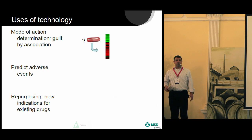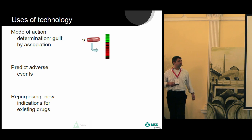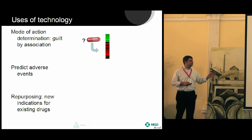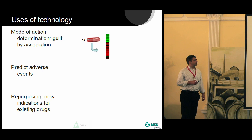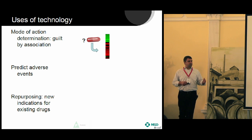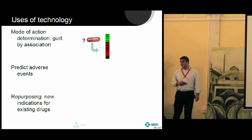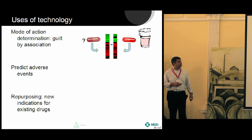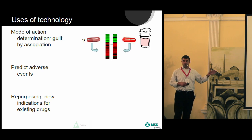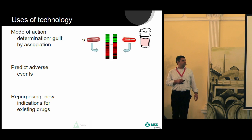Why would we want to do this on such a large scale? There are three use cases. One is mode of action determination: if we have a drug candidate that has an effect on a cell or disease model but we don't know how that effect is mediated — we don't know its target — we can get its gene expression profile and compare it to a large bank of profiles. If we find something similar in the database, we can look up what that compound is, what that target is, and infer the target of our unknown.